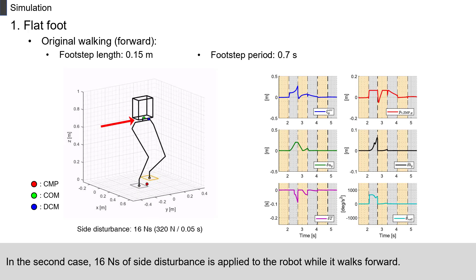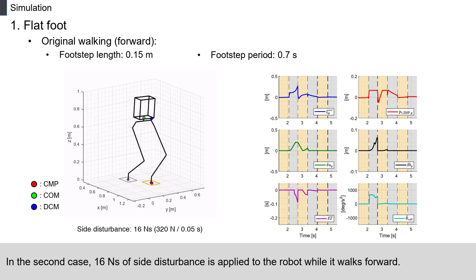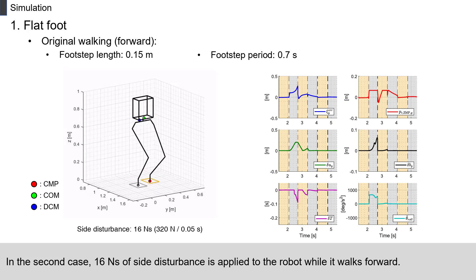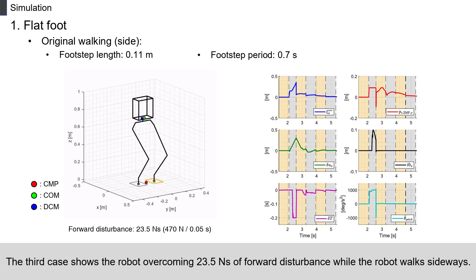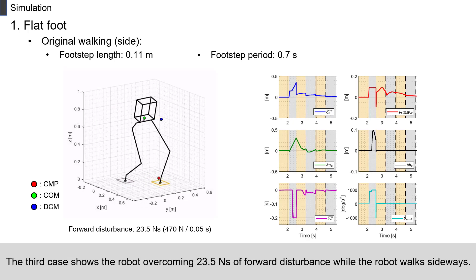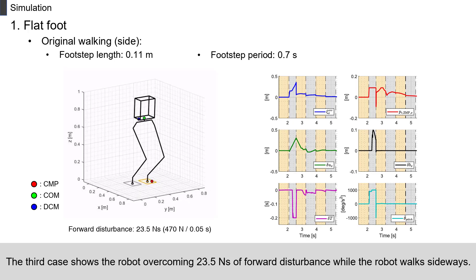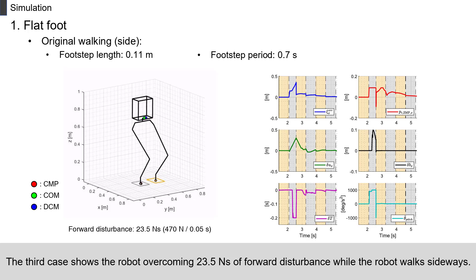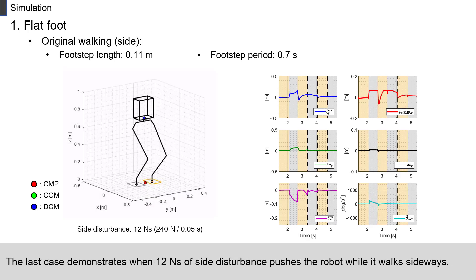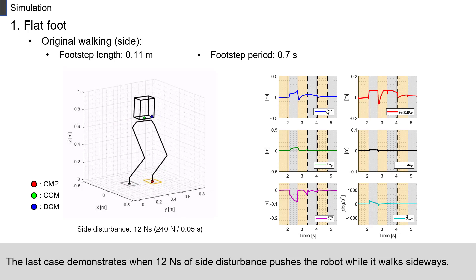In the second case, 16 Nm second of side disturbance is applied to the robot while it walks forward. The third case shows the robot overcoming 23.5 Nm second of forward disturbance while the robot walks sideways. The last case demonstrates when 12 Nm second of side disturbance pushes the robot while it walks sideways.